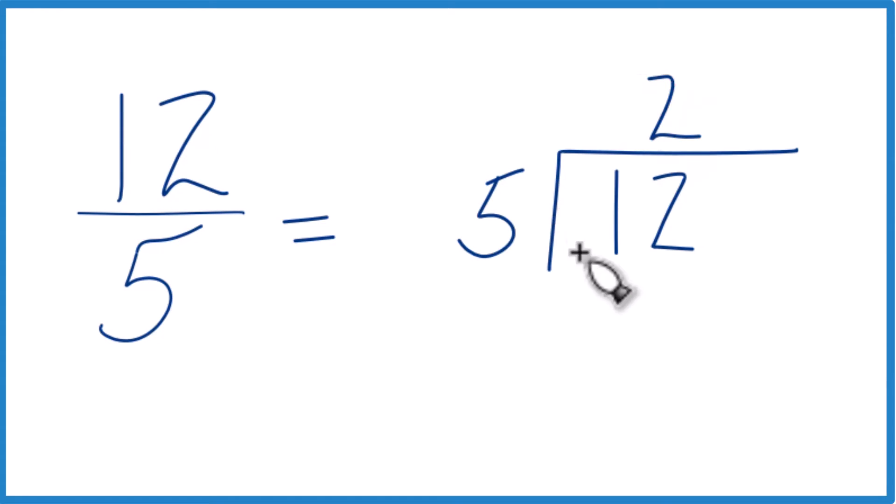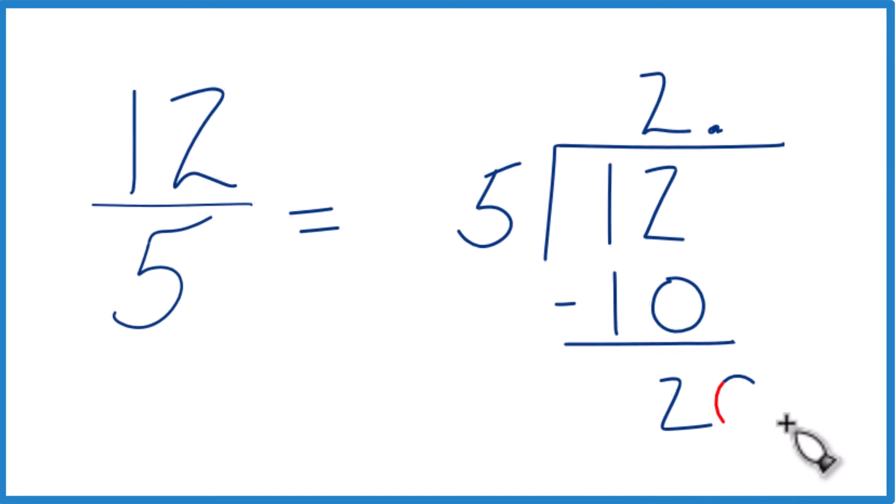So 2 times 5, that's 10. Then we subtract, we get 2 left over. 5 doesn't go into 2, but we could put a decimal point right up here, and we could call this 20.